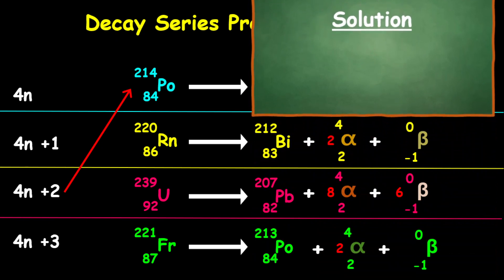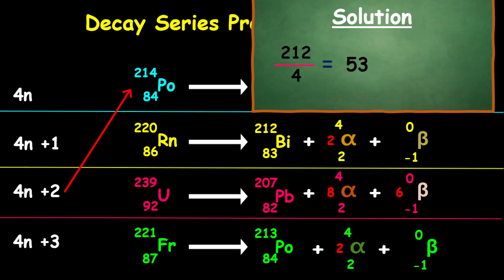Let's go to the second equation here. Let's divide one of the masses, let's divide 212 by 4. What we get here is 53, and so therefore this is just a 4n series. We're going to match that down to that one.